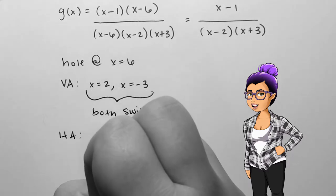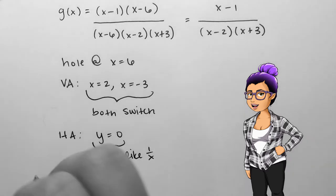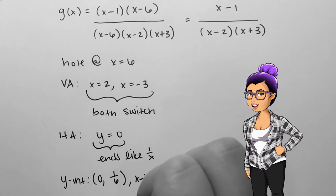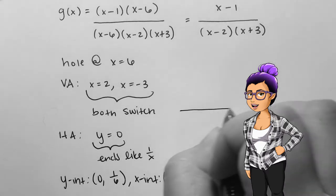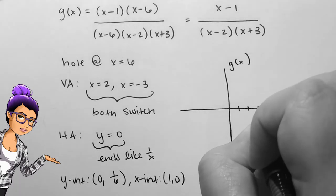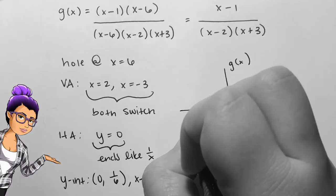The polynomials involved in this rational function are fully factored, but considering the degree and leading coefficient of each factor, the leading terms would be x and x squared, simplifying down to 1 over x. So the end behavior of the graph resembles 1 over x, and there is a horizontal asymptote at y equals 0.